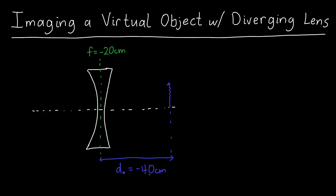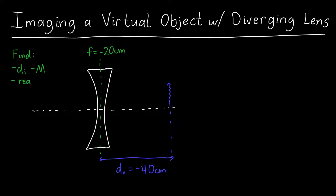This is a virtual object, which I've drawn as a squiggly ghost-like thing. It has a negative object distance. Typically real objects are on the left of a lens, and when something is on the right of the lens we take that to be a virtual object, because we assume light is propagating from left to right in our optical system. We want to find the image location, the magnification, and whether the image is real or virtual, and trace a couple of rays through the system.